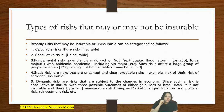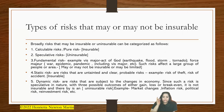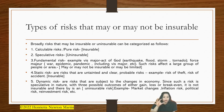Next is static risks. Static risks are risks that are untainted and clear. Probable risks — that is, which are possible of being foreseen — for example, risk of theft or risk of accident. A person might apprehend the risk of theft — you would not keep your precious items open or leave the doors of your house open. These are things that can be apprehended, so they are probable risks coming within the ambit of static risk. Such risks like theft or accidents are insurable.